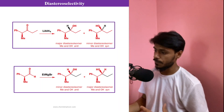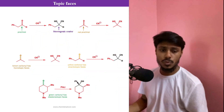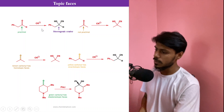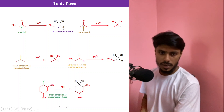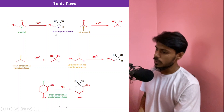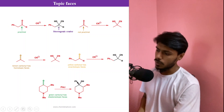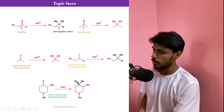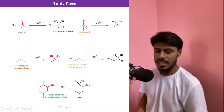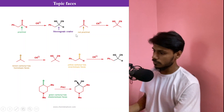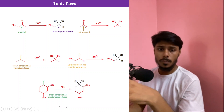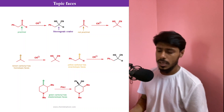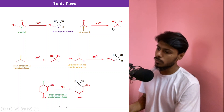Before going into the Felkin-Anh model, we need to understand the nature of carbonyl compounds. Carbonyl compounds have two faces, called topic faces. If you take an aldehyde and a ketone and add cyanide to each, in the first case we get a stereogenic center — four different groups around that center. Because we get a stereogenic center, this carbonyl carbon atom is called prochiral, whereas the second is not prochiral.